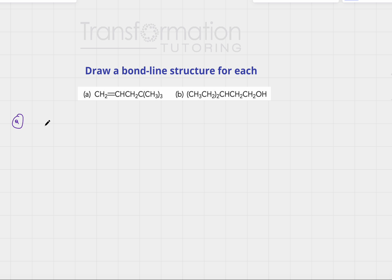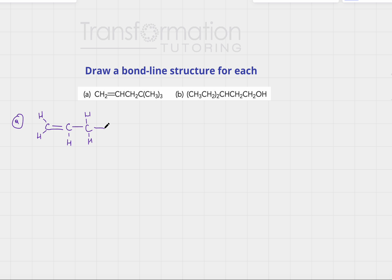For molecule A, we have a carbon with two hydrogens attached to it and a double bond. Then we have another carbon with a hydrogen on it. Every carbon wants four bonds, so it must have another bond — it's attached to a C, and that carbon has two hydrogens and must have a fourth bond attached to another carbon.